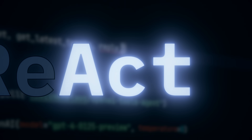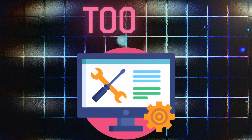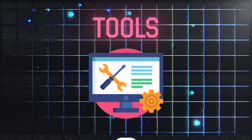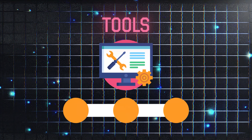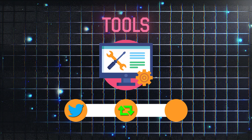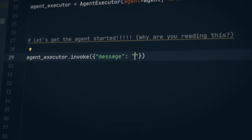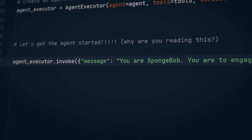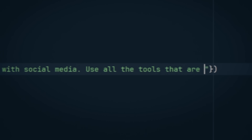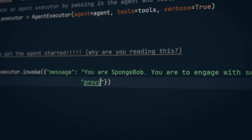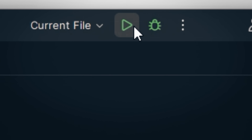The acting side in ReAct knows how to use tools, and these tools are actually defined by us specifically. So here are the tools that we're going to be using: tweet, retimeline, retweet, reply to tweet, and post image. So we can define an initial problem saying: you are Spongebob, you are to engage with social media, use all the tools provided. And let's test.